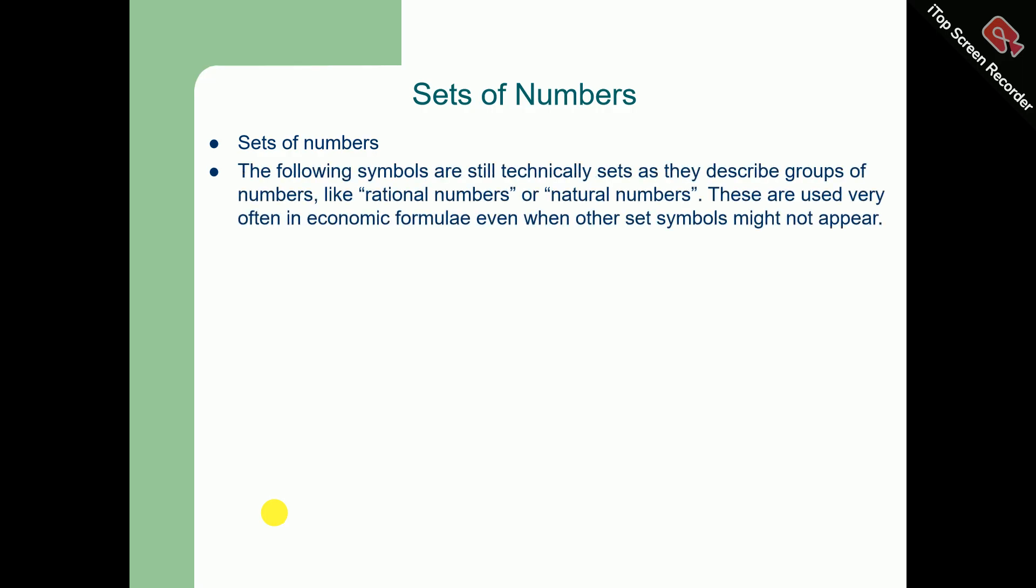Sets of numbers. The following symbols are technically still sets as they describe groups of numbers like rational numbers, natural numbers, and so on. These are used very often in economic formulae even when other set symbols might not appear. The symbol N is used for natural numbers. N is a set which stands for a real number.